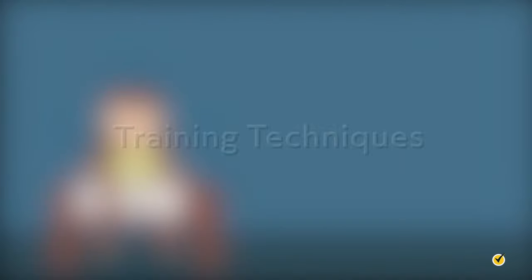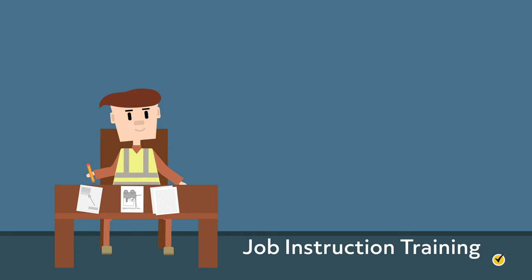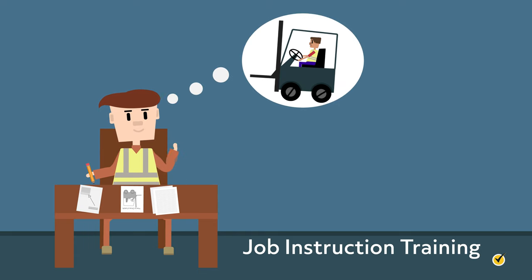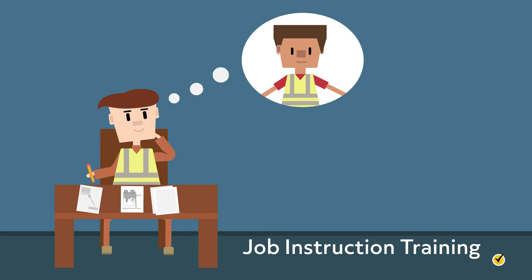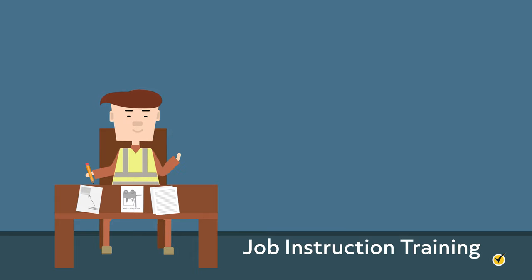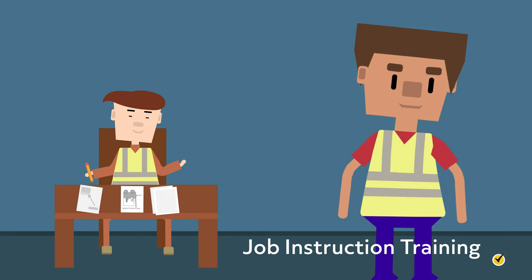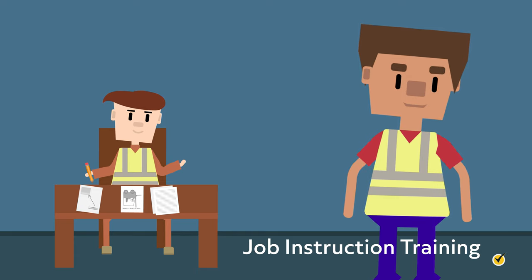Now let's discuss notable training techniques. Job instruction training, also known as on-the-job training, is when a new employee is trained by either their manager or co-worker on how to carry out their job effectively. For example, after the forklift driver was promoted to production supervisor, an employee from production was transferred into the forklift role. The most experienced forklift driver was then assigned to provide job instruction training covering the essentials of safety and operations.